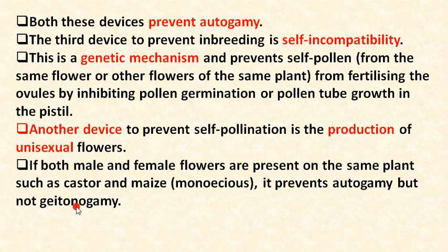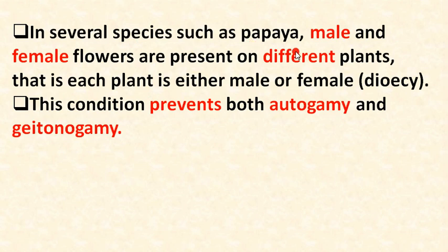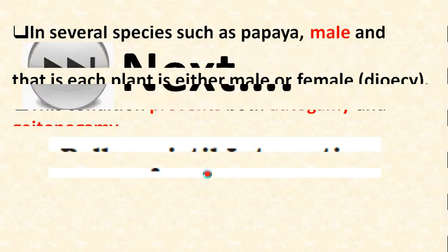If both male and female flowers are present on the same plant, such as in castor and maize — which are monoecious plants — it prevents autogamy but geitonogamy can still occur. In several species such as papaya, male and female flowers are present on different plants (dioecious), preventing both autogamy and geitonogamy.